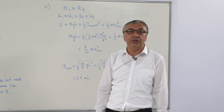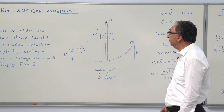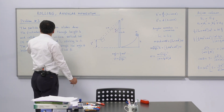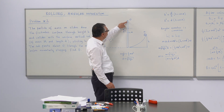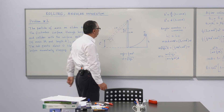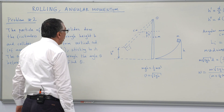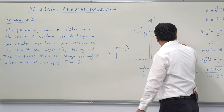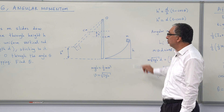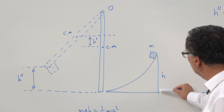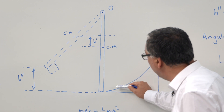In the second problem, we have a vertical rod of mass M and length d that can rotate about one end at point O. A small mass m slides down a frictionless surface from height h.